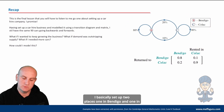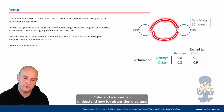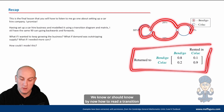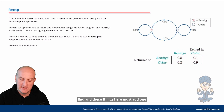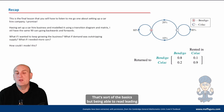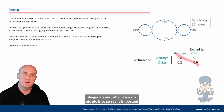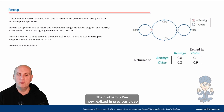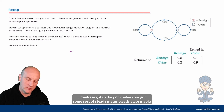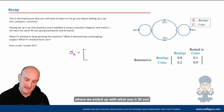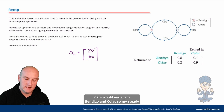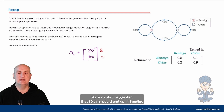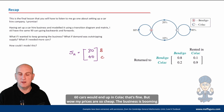Right, recap: I set up my car hire with two places — one in Bendigo and one in Colac. We can now read transition diagrams, read a transition matrix, and know that columns are 'start' and rows are 'end', and the columns must add to one. Reading leading diagonals and what they mean is really important. In the previous video we got to the point of a steady state matrix — I think it was 30 cars in Bendigo and 60 in Colac.